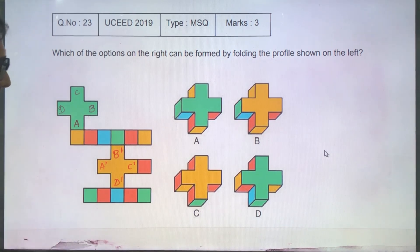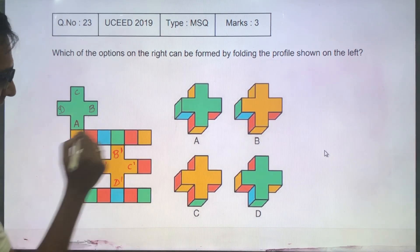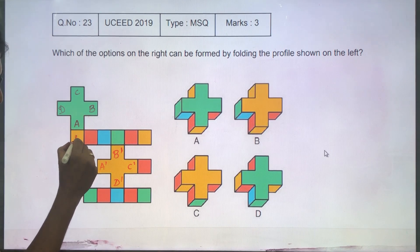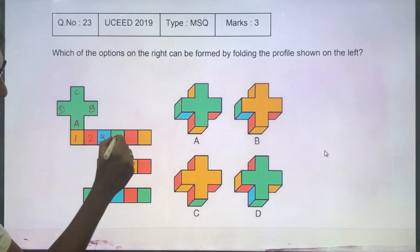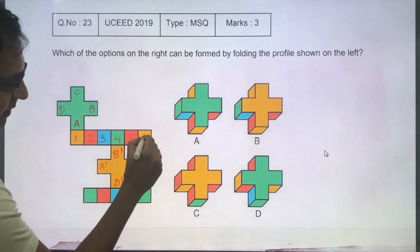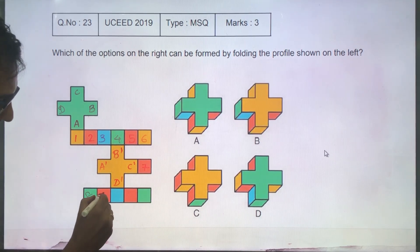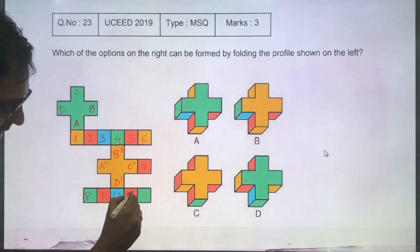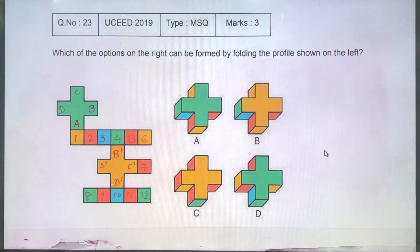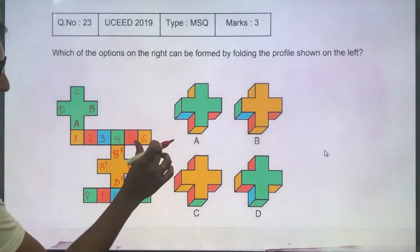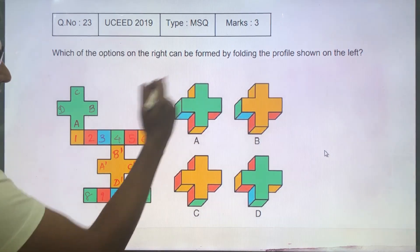So this will be under A. Now I am also going to name these. I'm just going to start saying 1, 2, 3, 4, 5, 6. I am going to call this as 7, 8, 9, 10, 11 and 12. Alright? So these are the pieces which are going to come at the side of the solid.